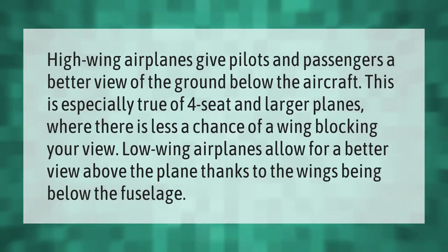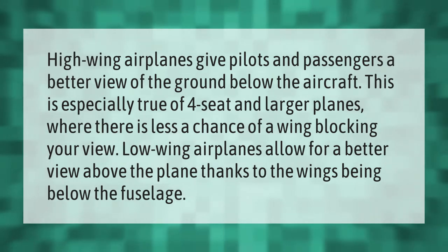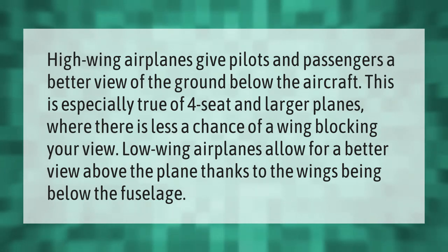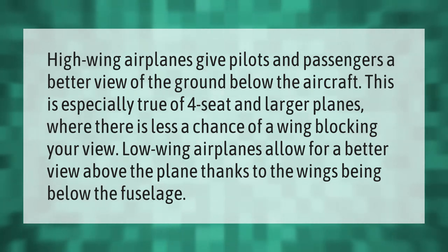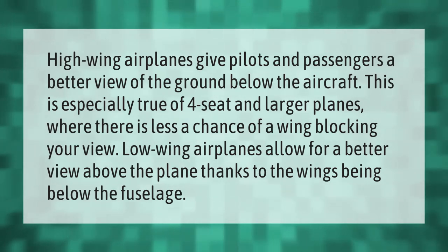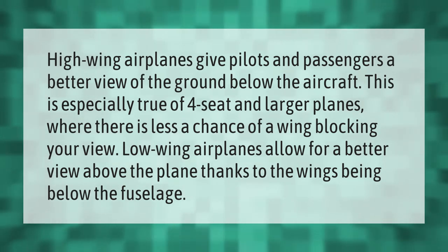High-wing airplanes give pilots and passengers a better view of the ground below the aircraft. This is especially true of four-seat and larger planes, where there is less chance of a wing blocking your view. Low-wing airplanes allow for a better view above the plane, thanks to the wings being below the fuselage.